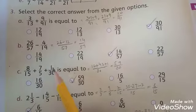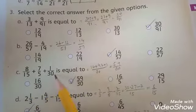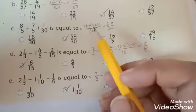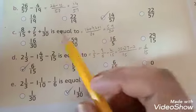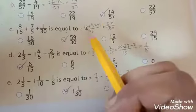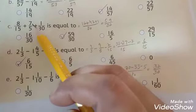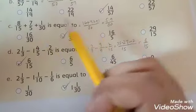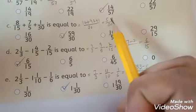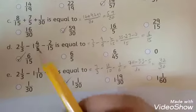We add these fractions and take LCM of 15, 5, and 30. LCM will be 30. 15 times 2 is 30, so 2 times 8 is 16. 5 times 6 is 30, so 6 times 7 is 42. Plus 1 — when we add these three numbers we get 59/30. This is your answer.